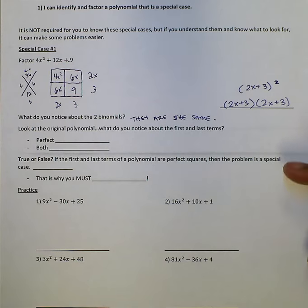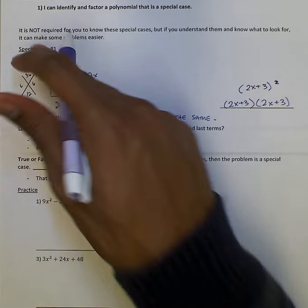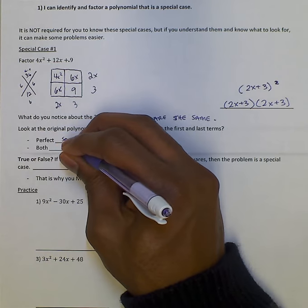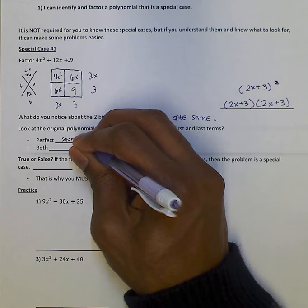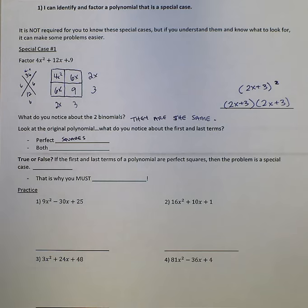Now let's look at the original polynomial. What do you notice about the first and last terms? You should see that they're both perfect squares. 4 is 2 squared, 9 is 3 squared.